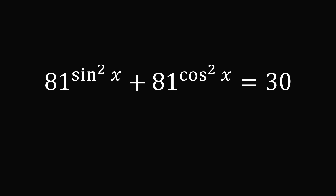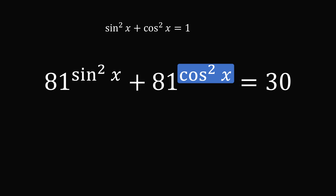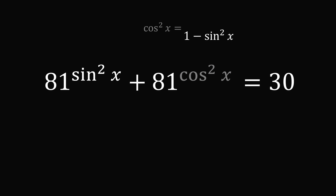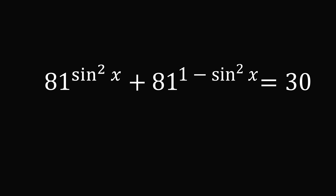This is an absolutely delightful equation to solve. We'll start by noticing that one of the exponents is cosine squared x. We want to put things in terms of one variable, so we will use the equation sine squared x plus cosine squared x is equal to one. We'll solve this for cosine squared x by subtracting sine squared x from both sides, and now we'll substitute into this exponent. So we have sine squared of x in one exponent and one minus sine squared x in the other exponent.